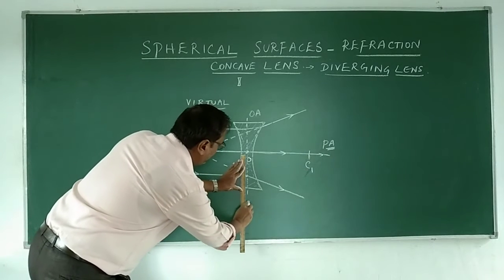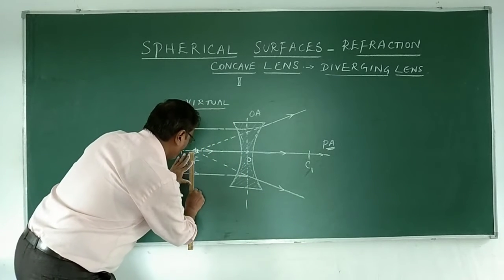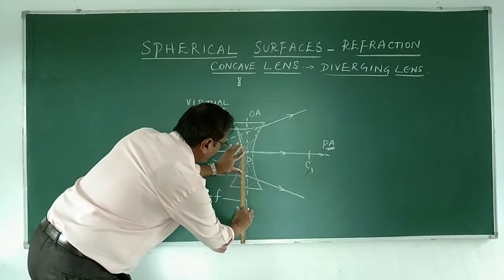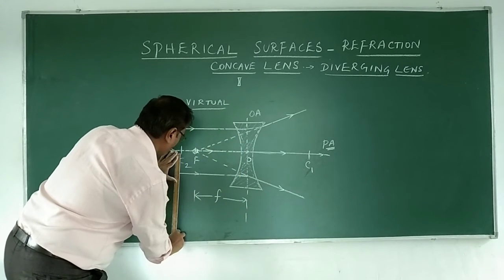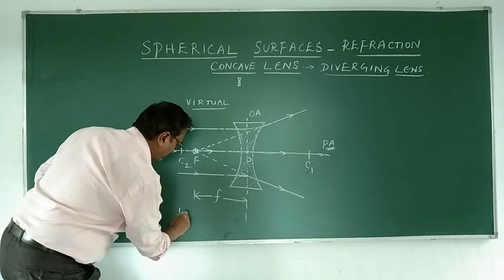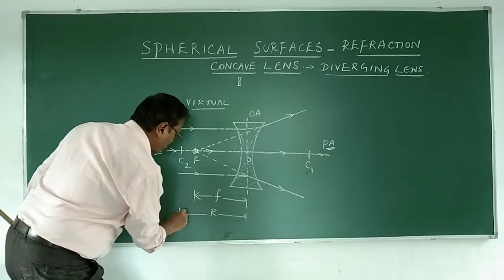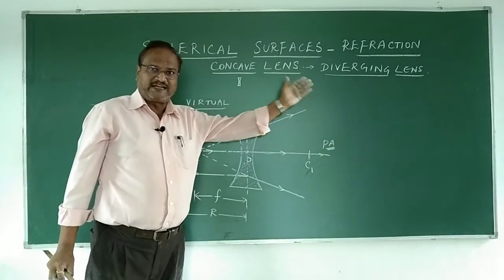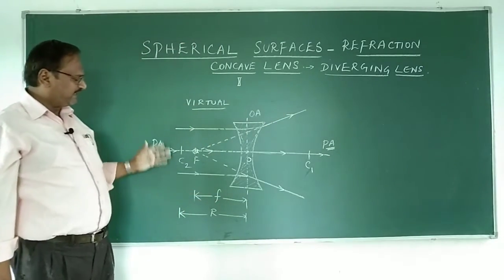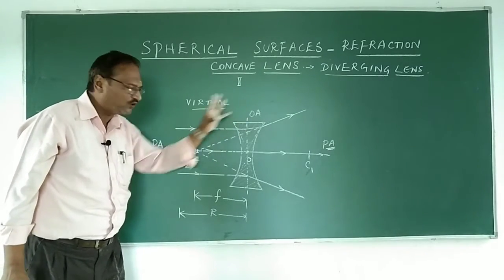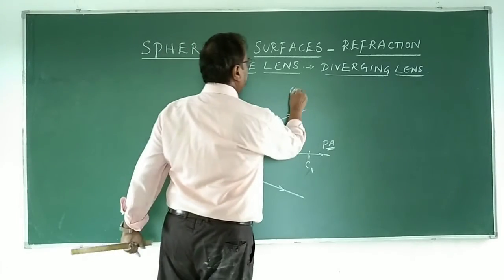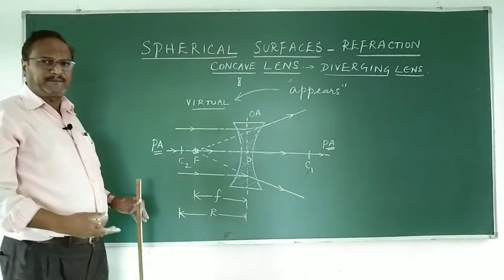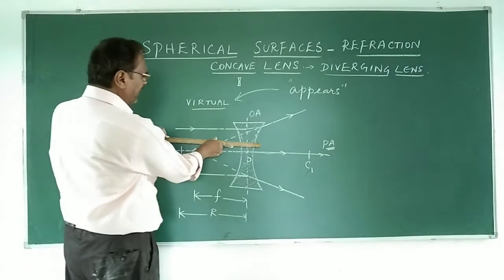The distance between the optical center and the focus is called the focal length. The distance between the focus and either surface is called the radius of curvature. So the terms remain the same as in a convex lens. In a convex lens it is converging and the focus is real. In the concave lens the rays appear to come from the focus — the word 'appears' is used carefully. That is why it is virtual — it is not really coming to that point.